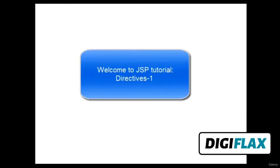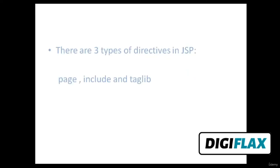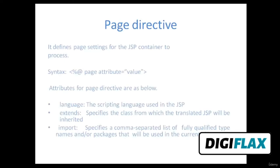In this video tutorial, we are going to learn about directives in JSP. Directives are messages to the JSP container that enable the programmer to specify page settings such as the error page, include content from other resources, and specify custom tag libraries for use in the JSP. Directives are processed at translation time; hence they do not produce any immediate output because they are processed before the JSP accepts any requests. There are three types of directives in JSP: page, include, and tag library.